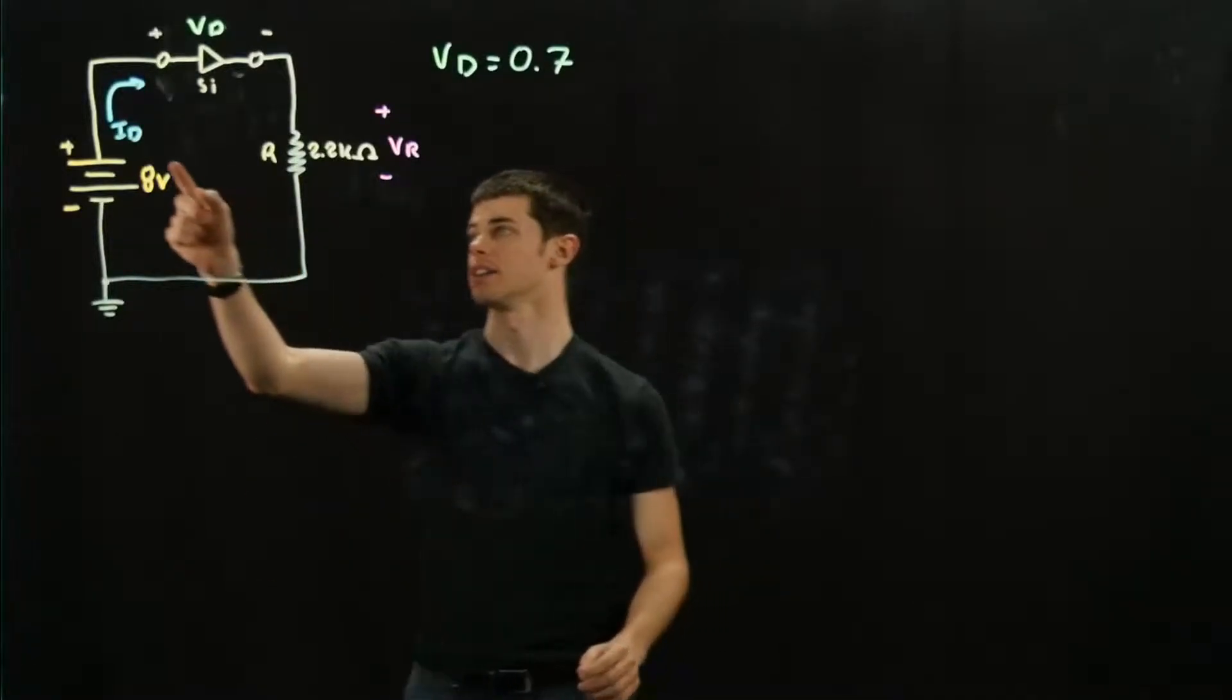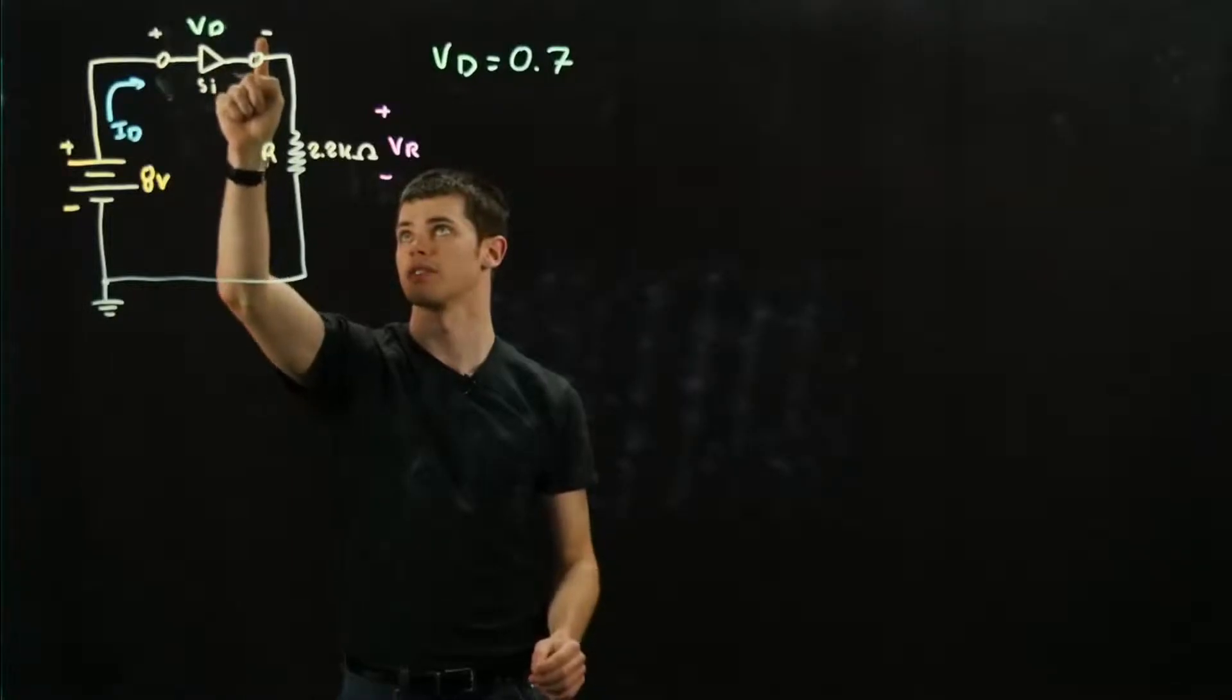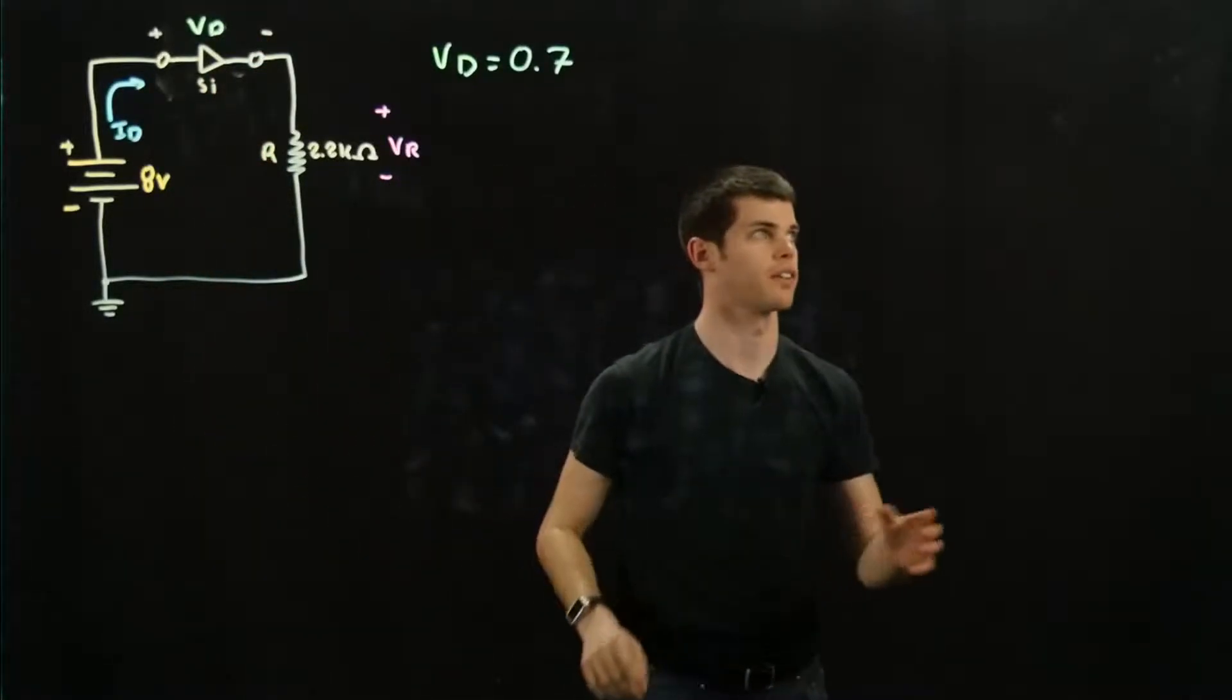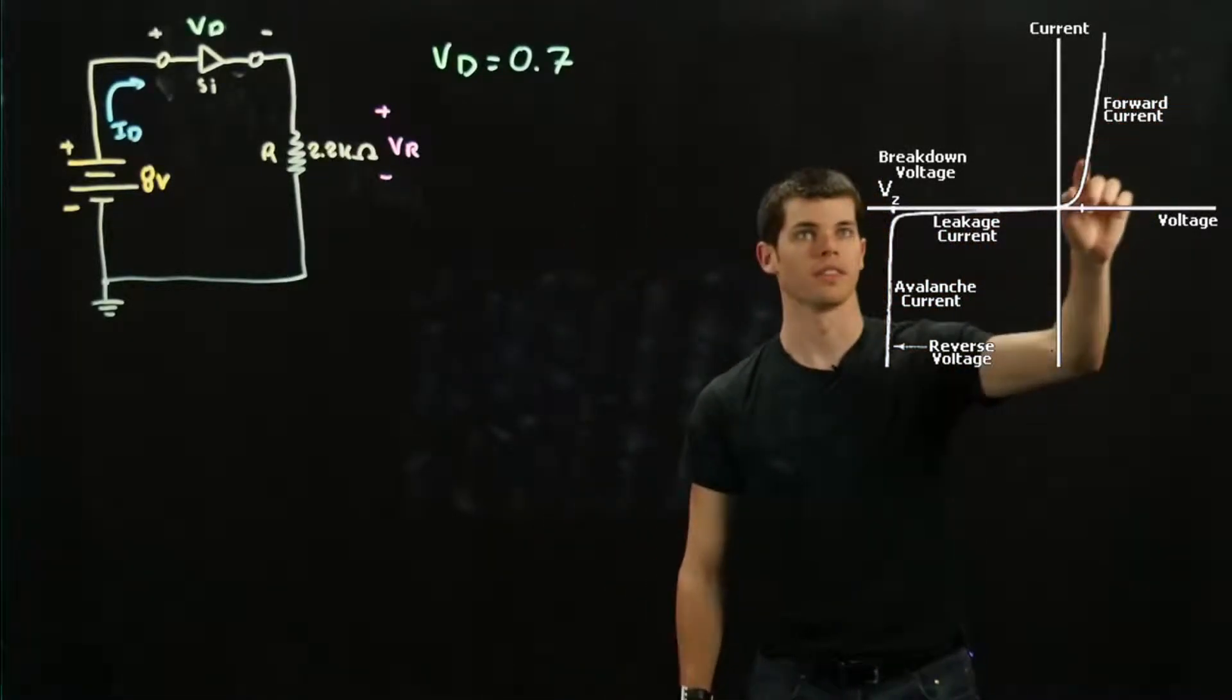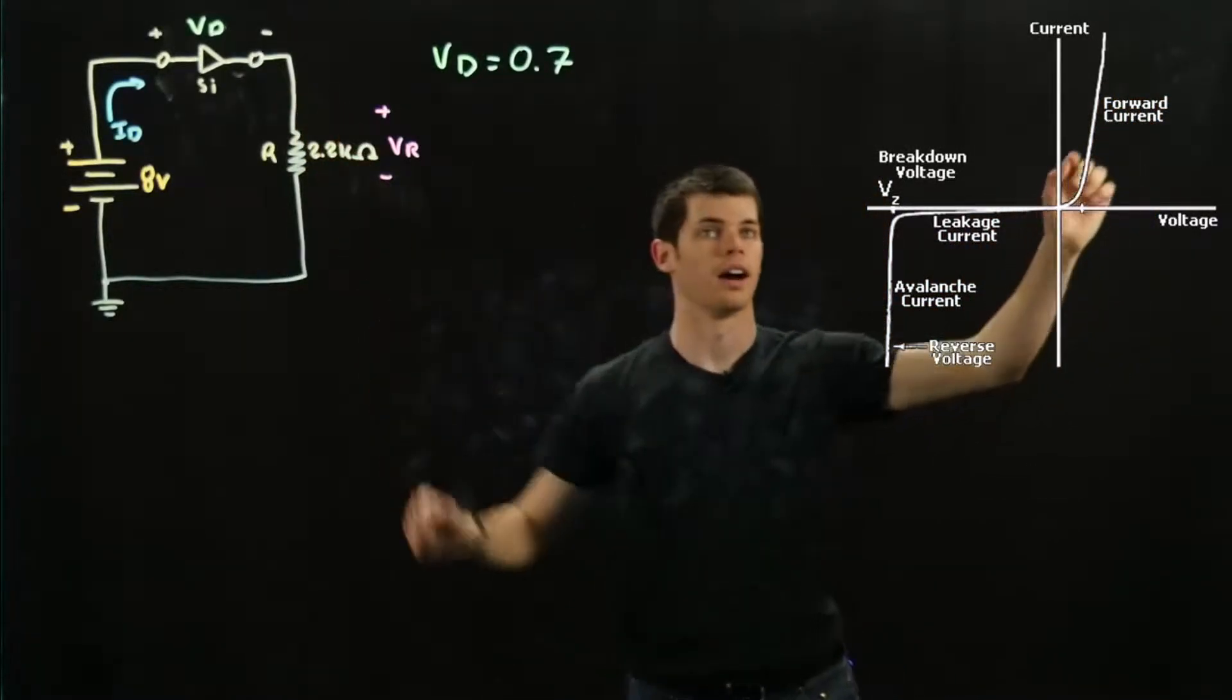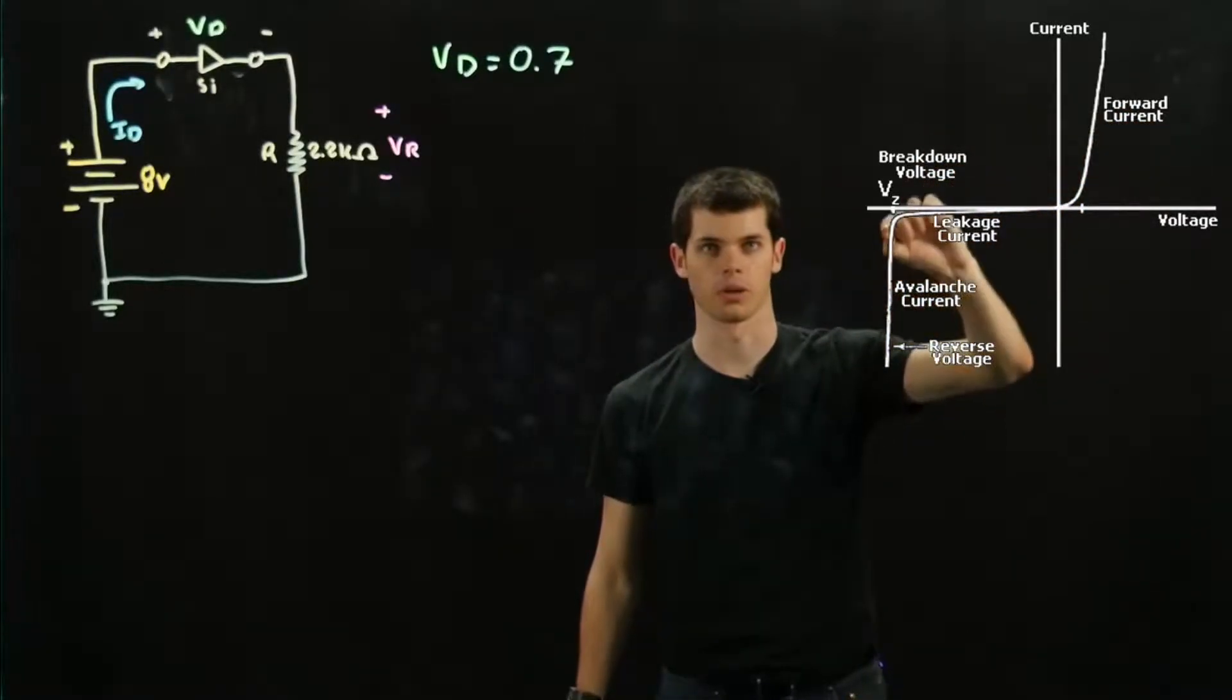Next, we're going to look at ID, and we're going to see that it's flowing through the positive to the negative. So we're going to have regular behavior, and if we look over here, we can see that we have the forward current. This is what we're going to be dealing with here, and then it comes down, levels off, and then we have this area right here where it drops down.